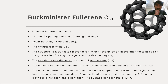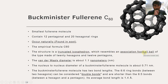The most famous fullerene is the buckminsterfullerene, the C60 fullerene. It is composed of 60 carbon atoms and contains 12 pentagonal and 20 hexagonal rings. It is the smallest known fullerene molecule, it occurs naturally, and it is found in soot. Its empirical formula is C60 and its structure is a truncated icosahedron, which resembles a football. The van der Waals diameter is about 1.1 nanometers.